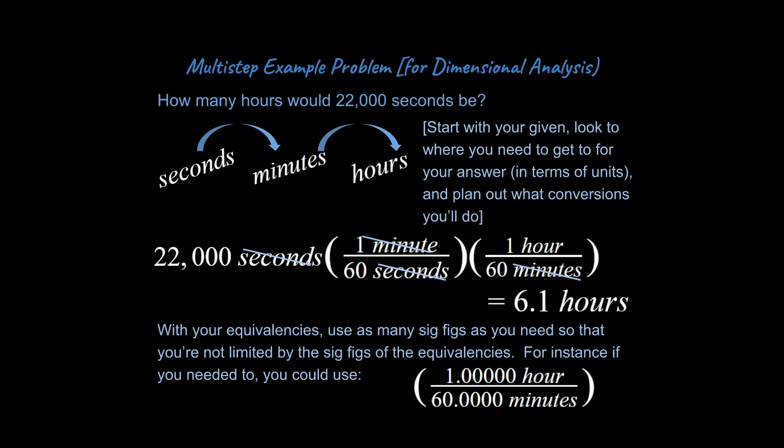So we know that with as many significant figures or significant digits as we need in the problem, so we're not limited. In other words, I'm limited by this having two sig figs over here. I should not be limited by my equivalencies that are just set up as like the definition of one minute is equal to 60 seconds. So hopefully you can see this is really not too bad.